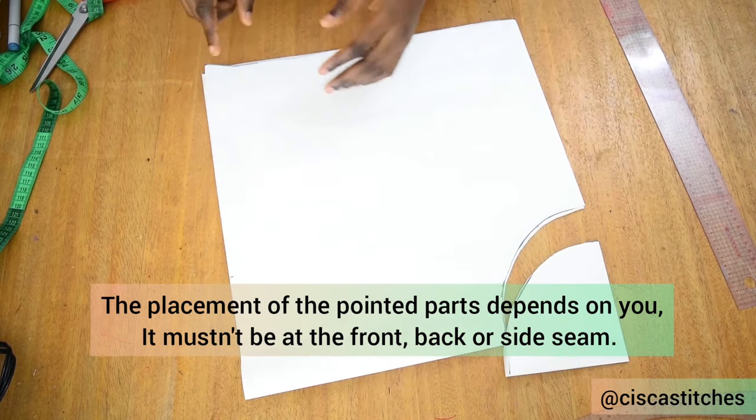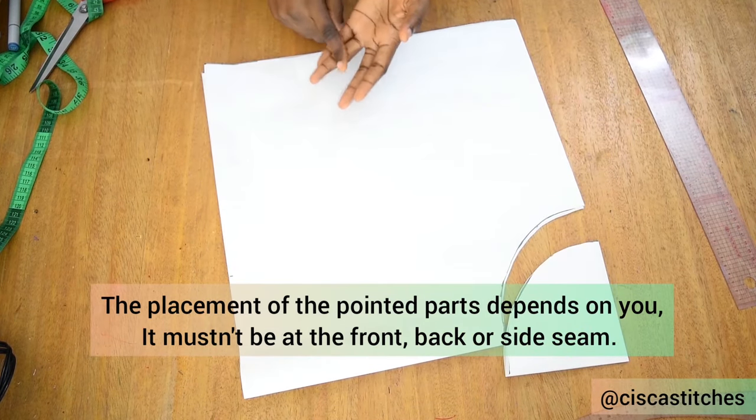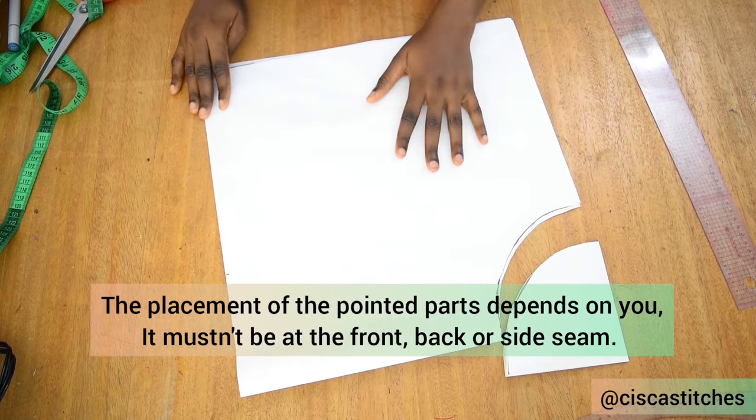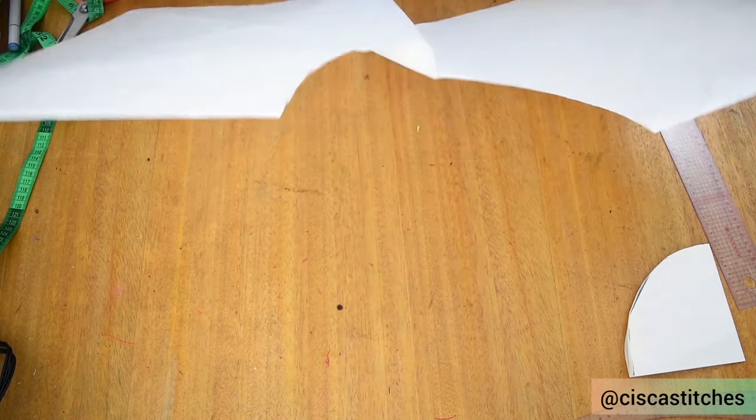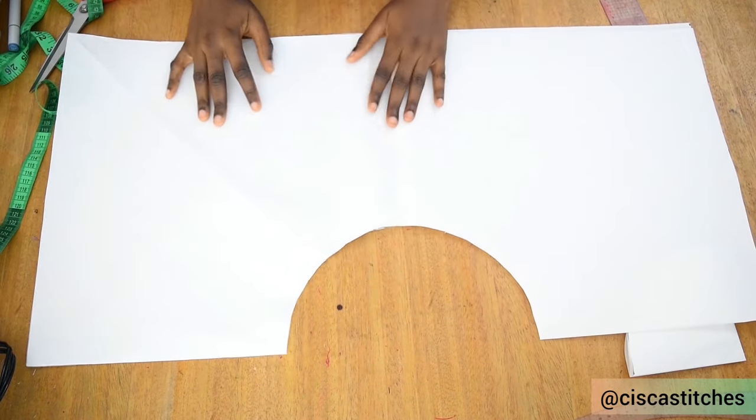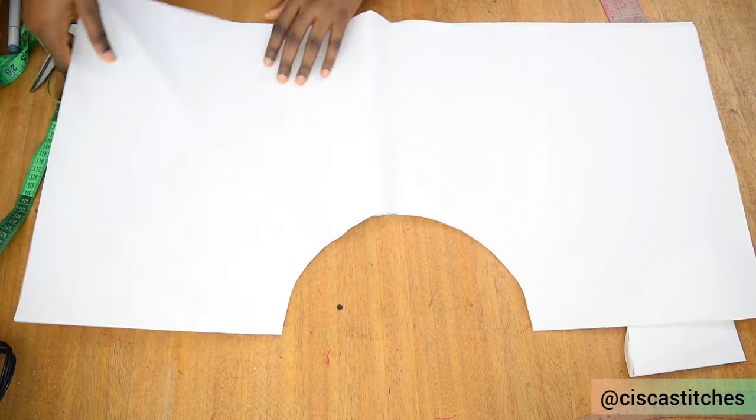This pointed part right here will be the longest part and it is the part that will form your center front, your center back, as well as your side seam area. So what we're going to do now is open it up, and by the time we open it up it is going to look like this.